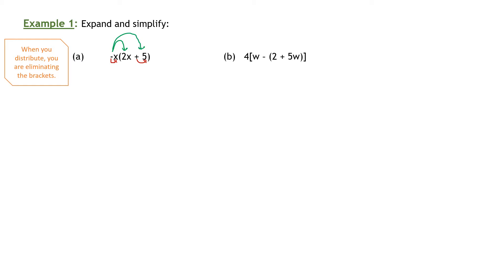So negative x times negative 2x — let's do that first. Negative x times negative 2x: numbers times numbers, so this is really a negative 1 in front here. Negative 1 times 2 is going to give me negative 2. Now we do x times x and that will be an x squared.